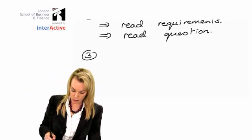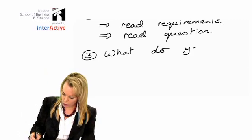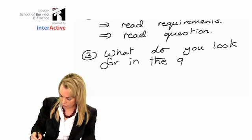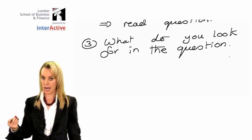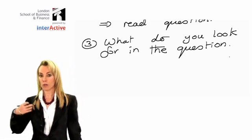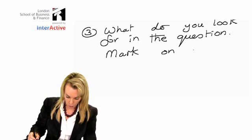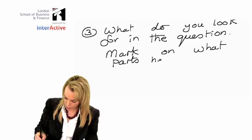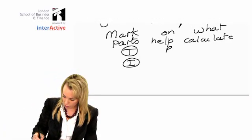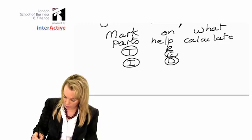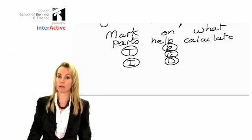The third key fact when you're doing these questions is what do you look for in the question? You've got to find all the different types of income that the person has. You might have somebody who's self-employed or maybe they've got some employment income. On your question paper, mark on what parts help calculate T or I or R or E or D. If there's a paragraph about somebody starting to trade, you write T. Mark that on your question paper.